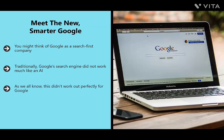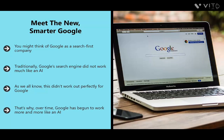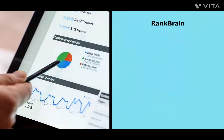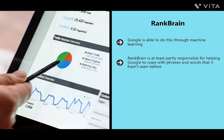That's why over time Google has begun to work more and more like an AI. Google no longer attempts to look for exact keyword matches — instead it tries to answer the questions you ask by understanding what the user is looking for along with the context. Through RankBrain, Google uses machine learning — specifically natural language processing — to cope with phrases and words it hasn't seen before. RankBrain is at least partly responsible for helping Google handle unusual searches.